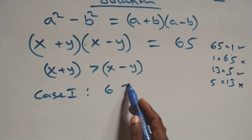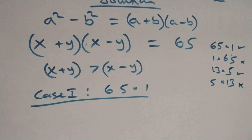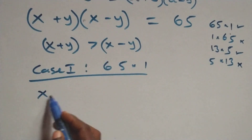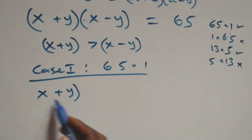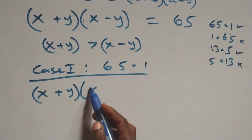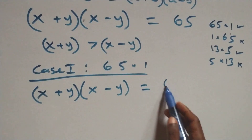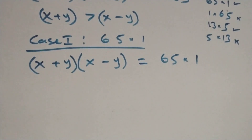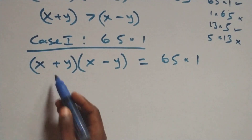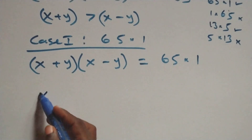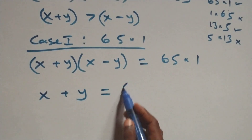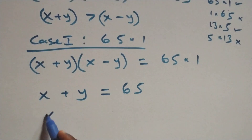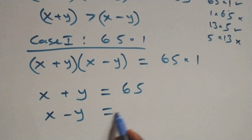Let's consider Case 1, which is 65 times 1. The equation (x+y)(x-y) equals 65 times 1, so the first bracket gives us x plus y equals 65, and the second bracket gives us x minus y equals 1.